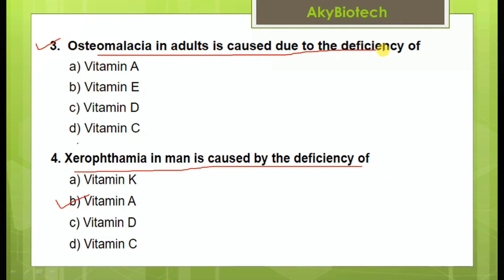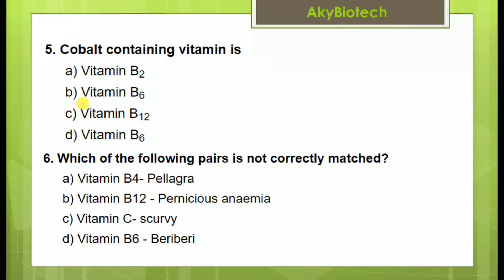Osteomalacia in adults is caused due to the deficiency of vitamin D — the correct answer is vitamin D.